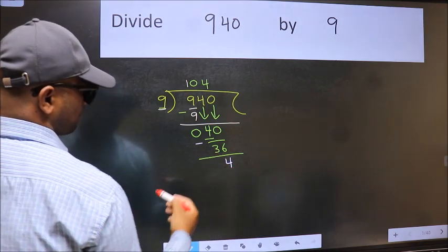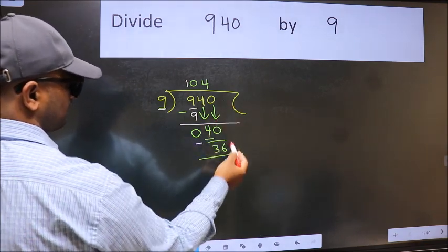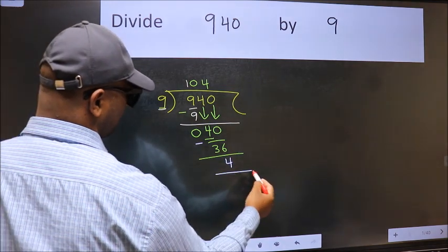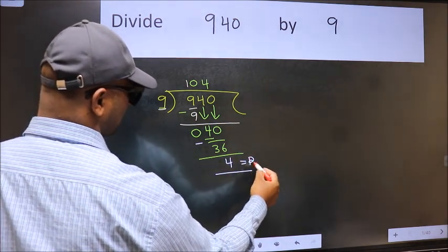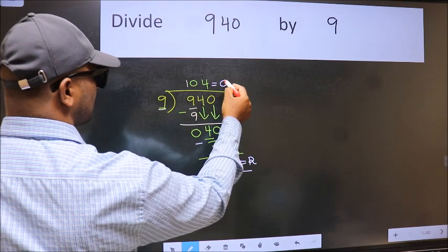We get 4. No more numbers to bring down, so we stop here. This is our remainder and this is our quotient.